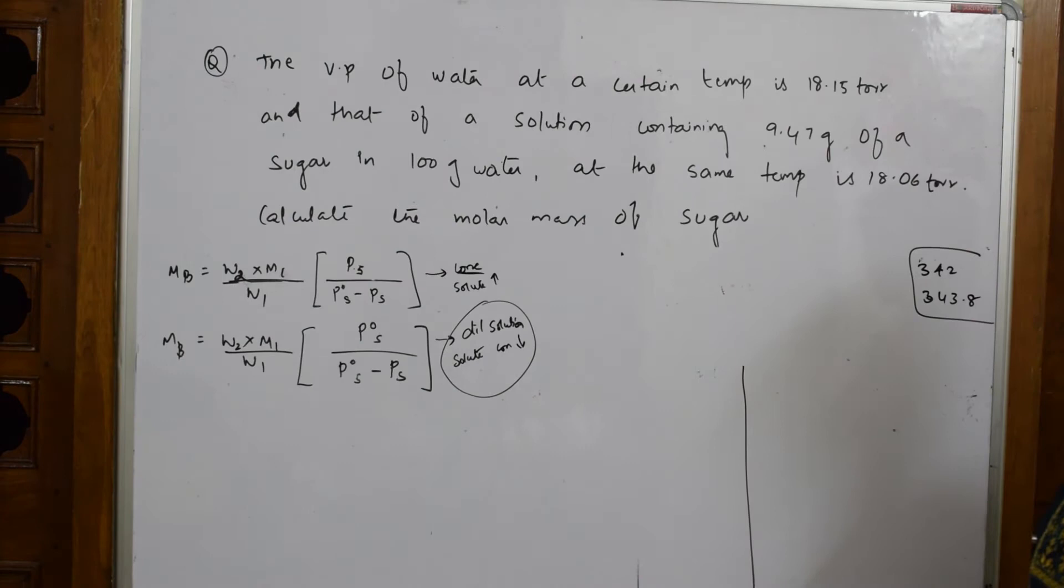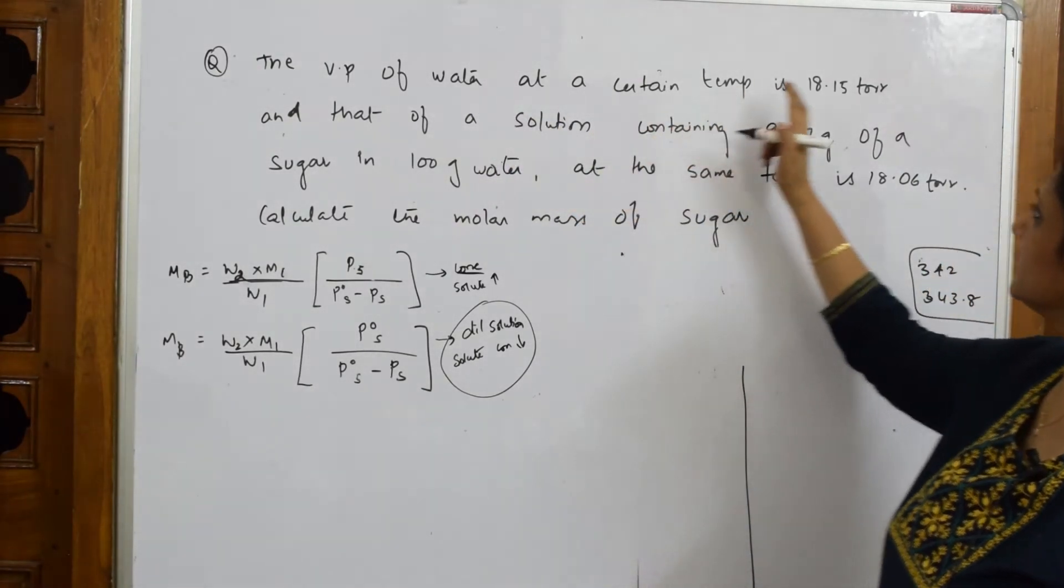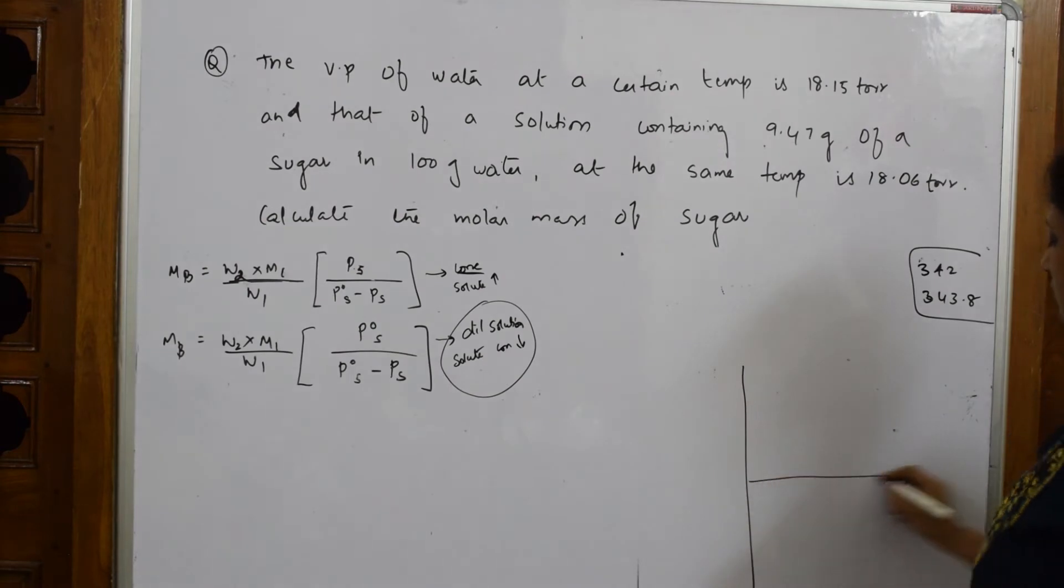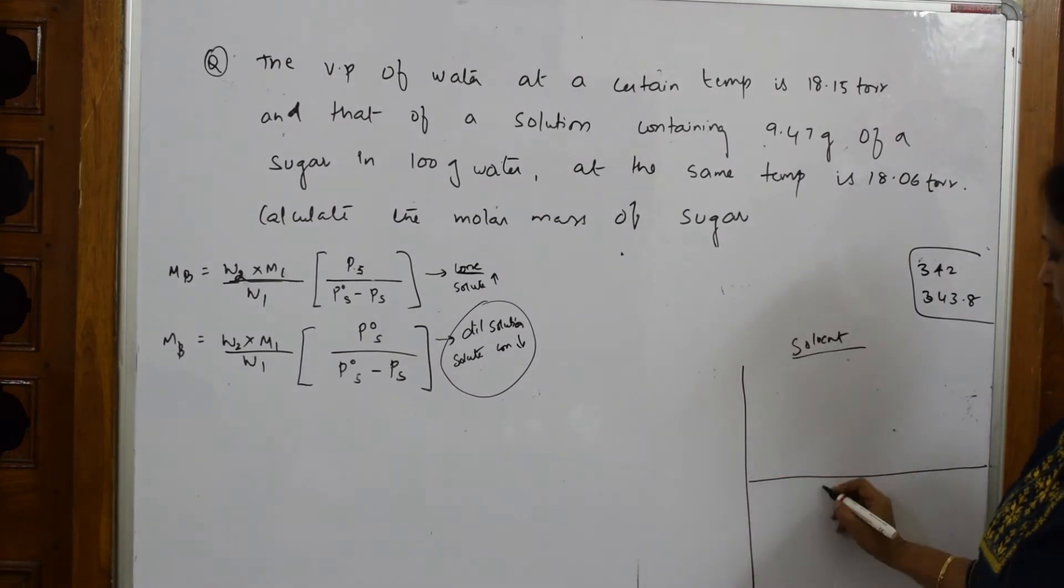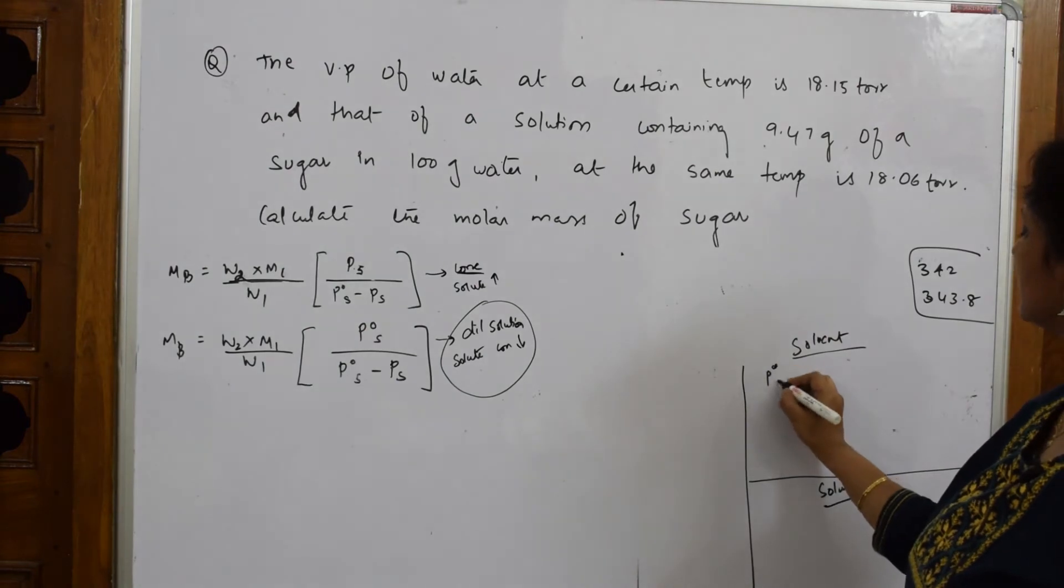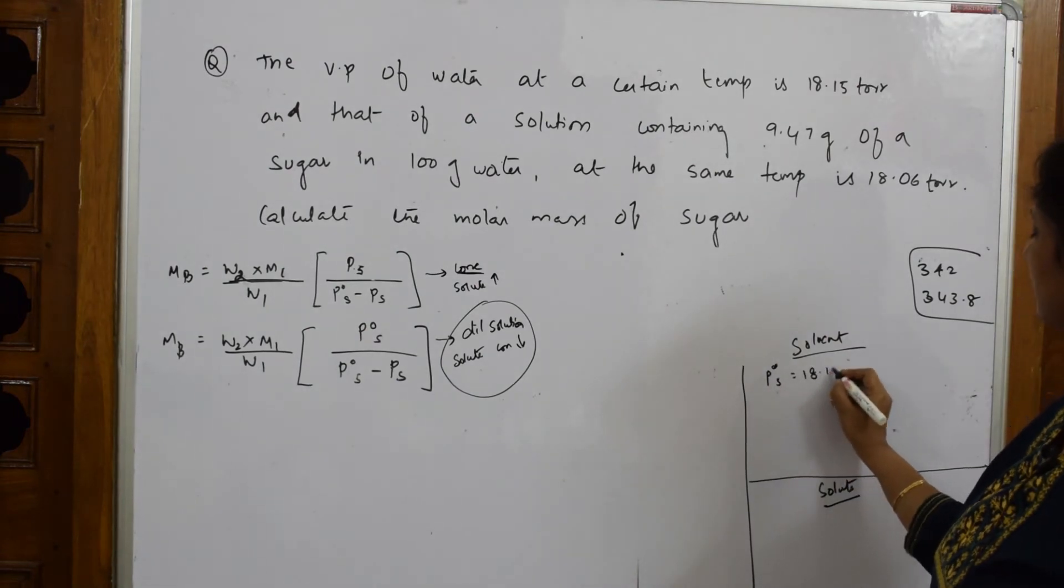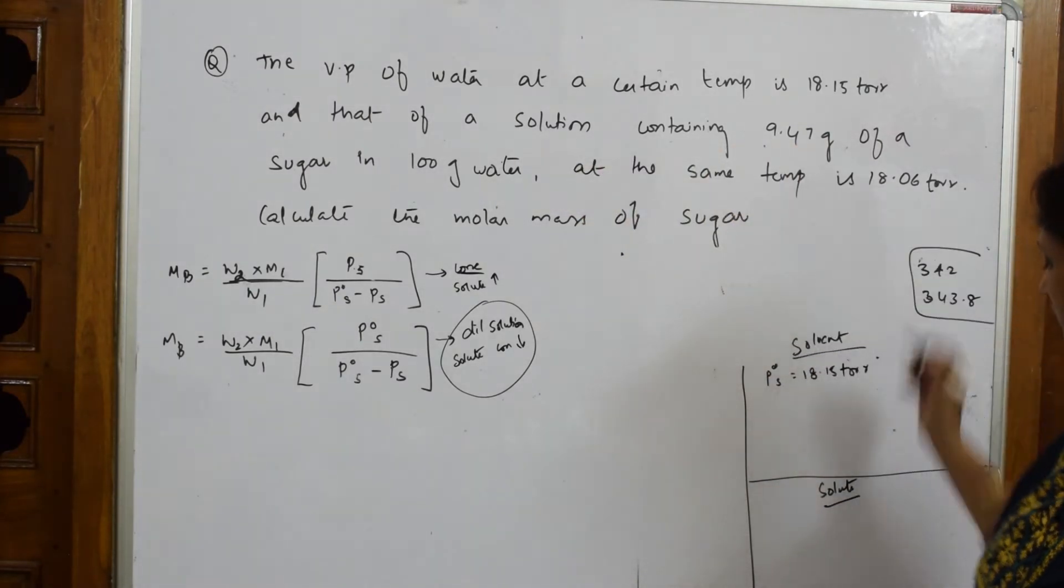Let us write what data is given to us. What do they give me? The vapor pressure of water at a certain temperature. Always pick solvent as w₁ and solute as w₂. For the solvent, what do they give me? The vapor pressure of water. P₀ˢ given to me is 18.15 torr, and that of a solution is